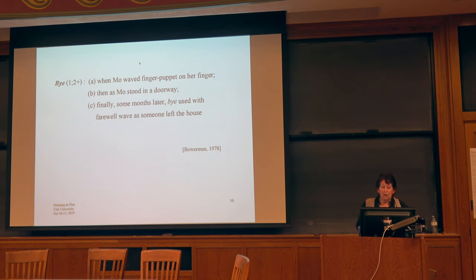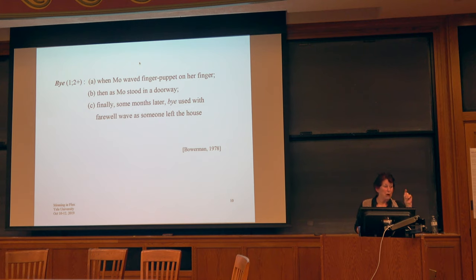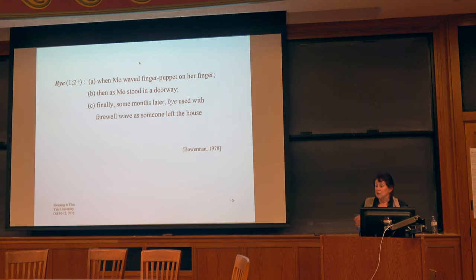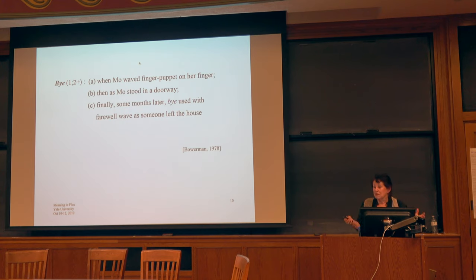Another partial meaning, which starts again in this very early stage, is 'bye.' This was documented by Melissa Bowman many years ago. She had a little finger puppet and was waggling her finger at her daughter with the finger puppet on it and saying 'bye.' The child picked up 'bye' as being something you said when you saw the finger puppet, regardless of context. But then the child started to see that 'bye' was relevant when the mother was standing in the doorway with the finger puppet, and so it became associated with any doorway — indoor doorways, not the front or back door. It wasn't until some months later that the child mapped 'bye' onto the waving when someone left the house.